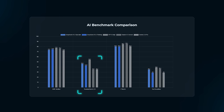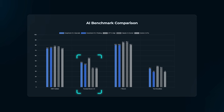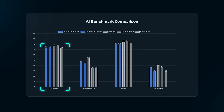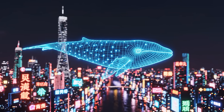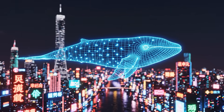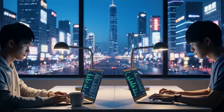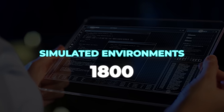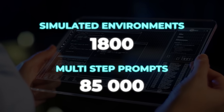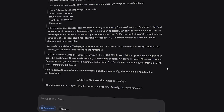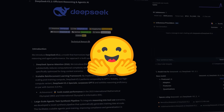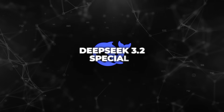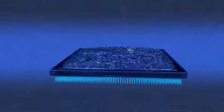On Terminal Bench 2.0, which measures coding workflow accuracy, it scored 46.4%. On SWE Verified, it hit 73.1%, and on SWE Multilingual, 70.2%. Those are enterprise-level results, showing it can actually handle production coding and problem solving. The team also went deep into agentic training, creating over 1,800 simulated environments and 85,000 multi-step prompts so the model could learn how to generalize its reasoning in unfamiliar tool scenarios. For companies that need autonomy and transparency, DeepSeek made the base model open on Hugging Face. The special version stays API-only because of its high token use — their way of balancing accessibility and cost efficiency.